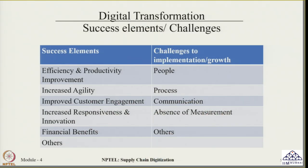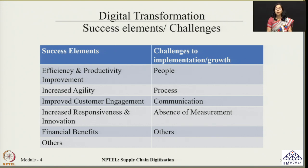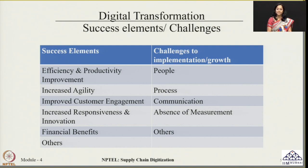When we are trying to bring any digital transformation in a process — which can be a simple warehouse management process, transportation management system or any similar system — there are always some success elements which are attached with it and, in parallel, there are challenges. It is very important that we have a very clear objective of implementing the digital transformation. How do we measure this success? We can quantify these success elements in the form of improvement in the efficiency of the processes or improvement in the productivity of the system.